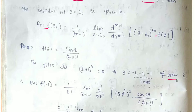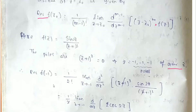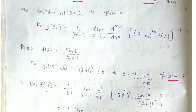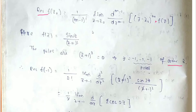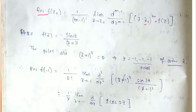So we can find the order of the function at z = minus 1, and set up the residue formula accordingly. With m = 3, we need to take the second-order derivative of (z+1)³ times f(z), which simplifies to sin(2z).